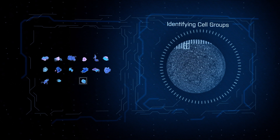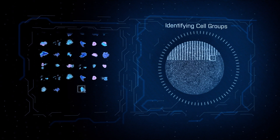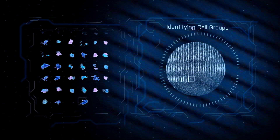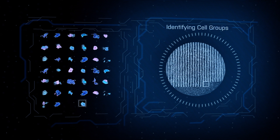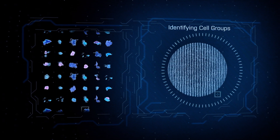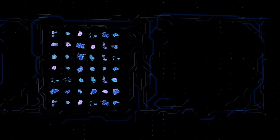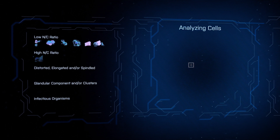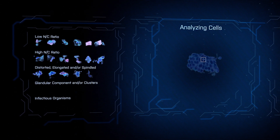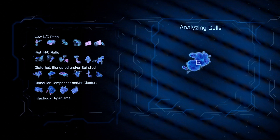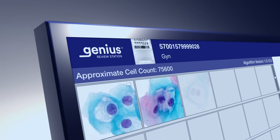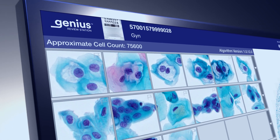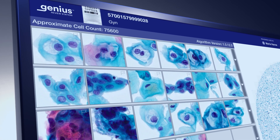Genius Cervical AI rapidly analyzes the digital image, conducting object location and analysis, and classifies the features of each cell and infectious organism. The algorithm then selects the most clinically relevant objects and populates them into a single gallery view, enabling reviewers to make an interpretation using only the AI-generated gallery of images.